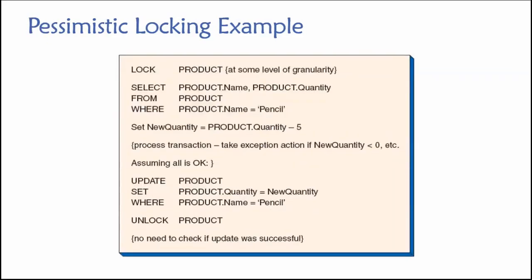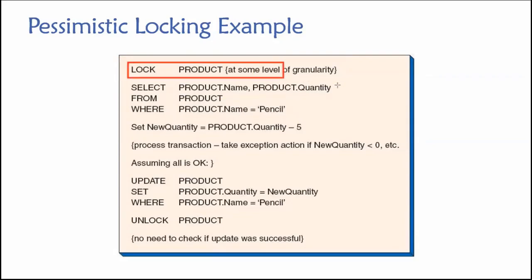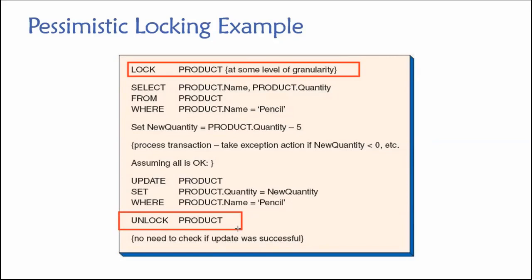Pessimistic locking, of course, is the assumption that something will go wrong. So to prevent a conflict, we begin by locking the resources that we need. In this case, we're locking the product table at some level of granularity — maybe for a particular row, like the pencil product. Nobody else can access this pencil product while we're busy using it because we've locked it.